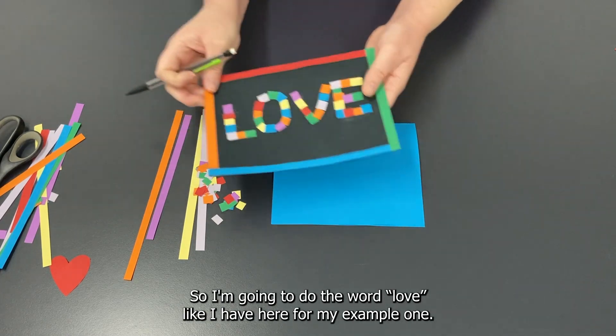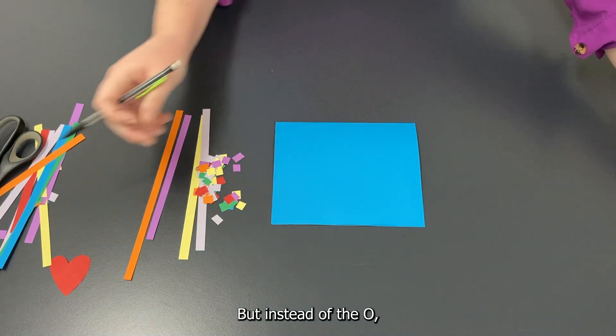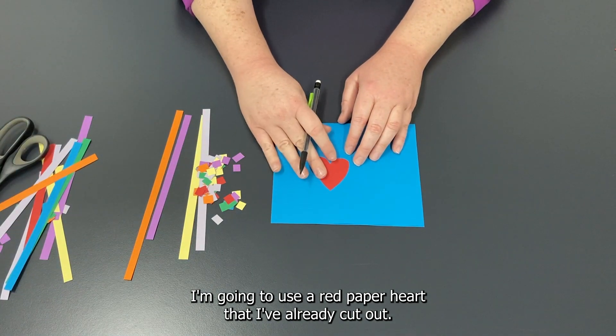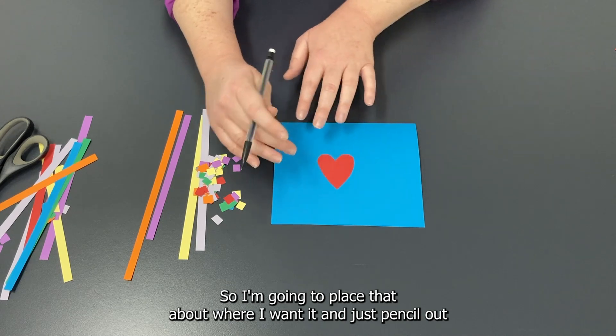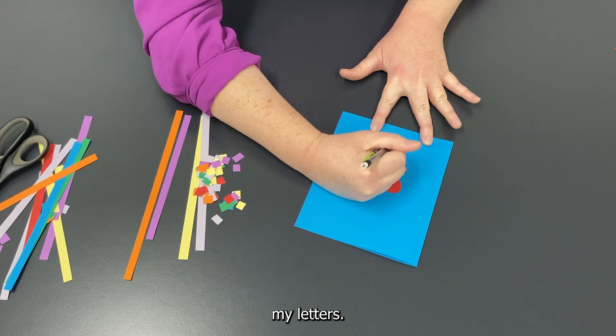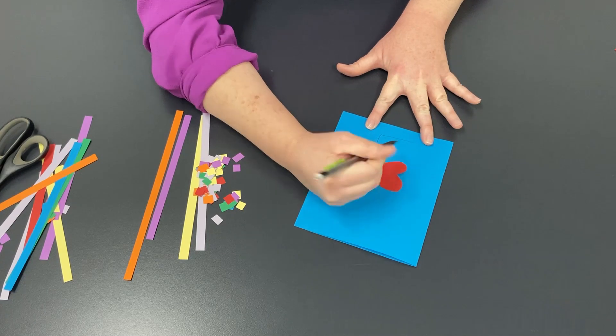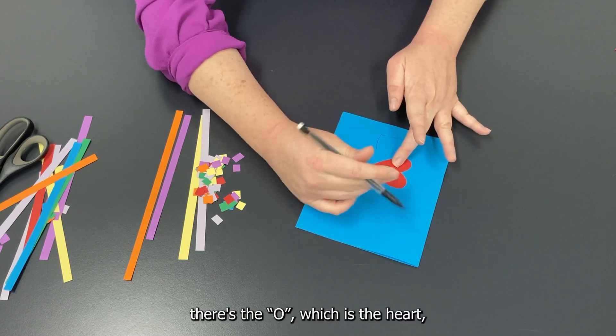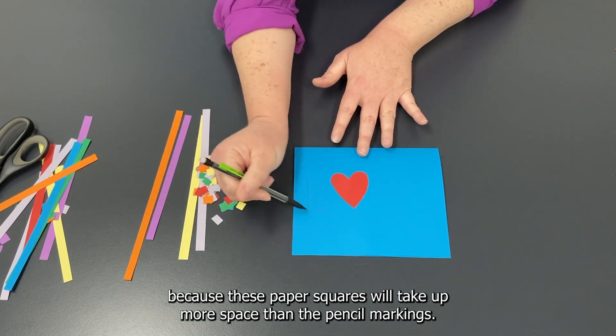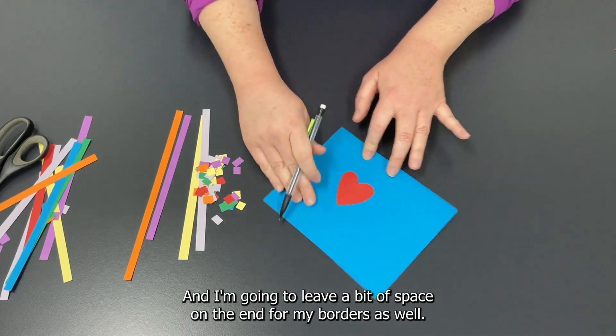So I'm going to do the word 'love' like I have here for my example, but instead of the O, I'm going to use a red paper heart that I've already cut out. So I'm going to place that about where I want it and just pencil out my letters—L, there's the O which is the heart—and you want to leave a little bit of space between because these paper squares will take up more space than the pencil markings, and I'm going to leave a bit of space on the end for my borders as well.